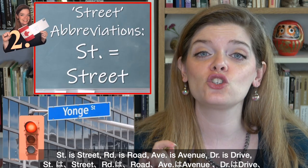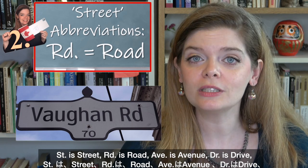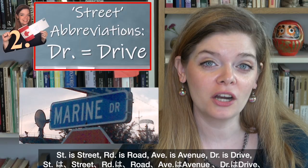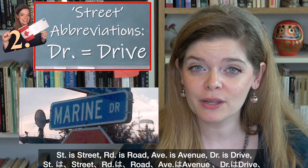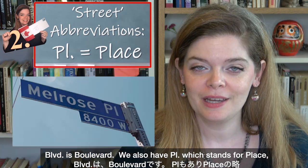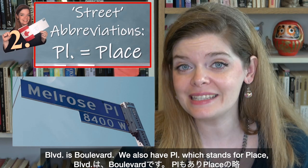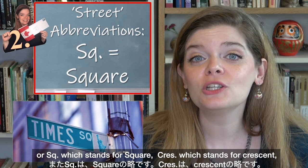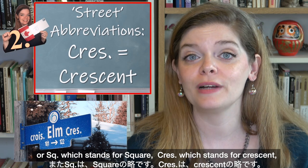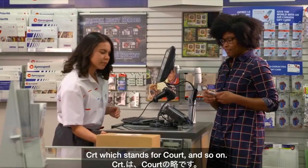Here are some useful abbreviations commonly used on letters for addresses: ST is street, RD is road, AVE is avenue, DR is drive, BLVD is boulevard. We also have PL which stands for place, SQ which stands for square, CRES which stands for crescent, and CRT which stands for court, and so on.